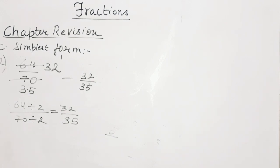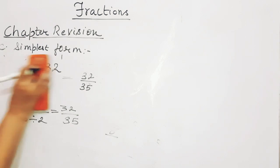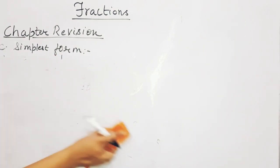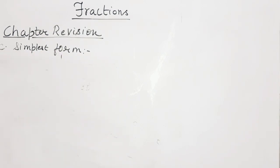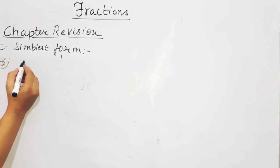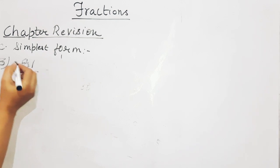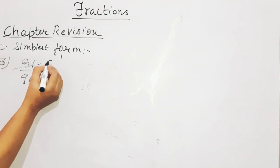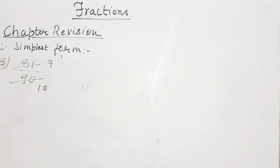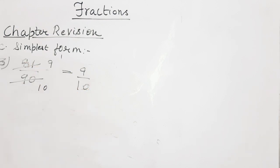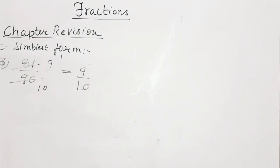I hope question number 2 is clear. If not, reply in the comment section. Now question number 3: 81 upon 90. Both 81 and 90 reduce by 9 — nine 9s are 81, nine 10s are 90 — so the simplest form is 9 upon 10. The HCF of 81 and 90 will also be 9.